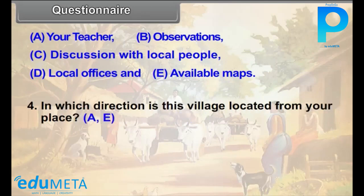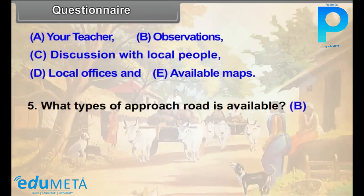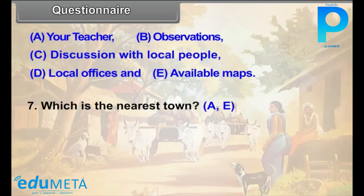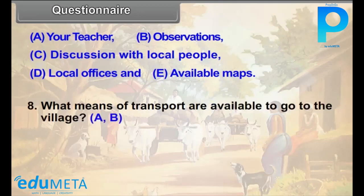Question 5: What type of approach road is available? (B) Question 6: Is there any village panchayat office in the village? (C, D) Question 7: Which is the nearest town? (A, E) Question 8: What means of transport are available to go to the village? (A, B) Question 9: In which physical region are the village and its surroundings located — mountain, plateau, or plain? (B, D)